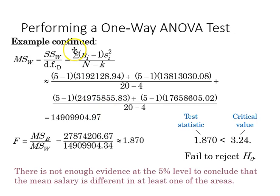The final F statistic, taking the MSB and dividing it by the MSW, gives us 1.87. Our critical value, 3.24 is greater than that. We fail to reject the null. There's not enough evidence at the 5% level to conclude the mean salary is different in at least one of the areas.